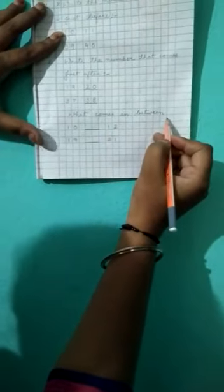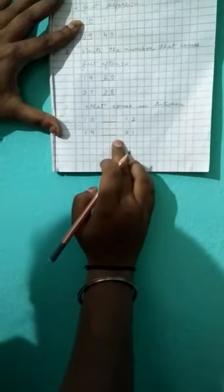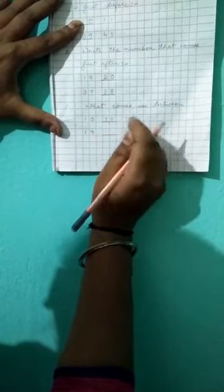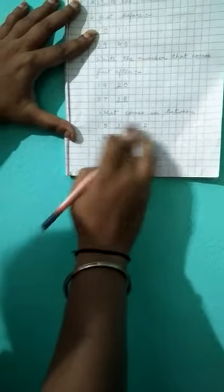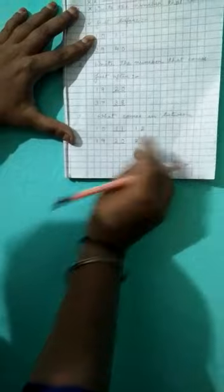Now question number 3 is what comes in between, means between the two numbers. So 10 after. Here also you give one box gap, and here also you give one box gap, and between answer you write it down. 10, 11, 12. Means between 10 and 12, 11 is the answer. 19, 20, 21.